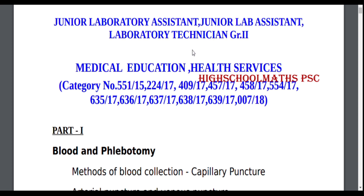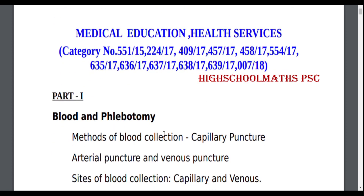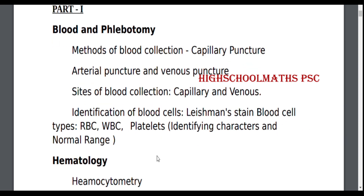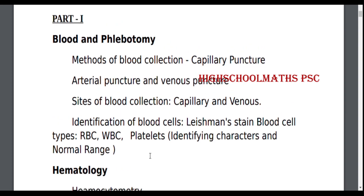Kerala PSC will be available in Kerala. Part 2 MLT: first is Blood and Phlebotomy — Methods of Blood Collection, Capillary Puncture, Arterial Puncture and Venous Puncture, Sites of Blood Collection (Capillary and Venous), Identification of Blood Cells, Leishman Stained Blood Cell Types: RBC, WBC, Platelets.